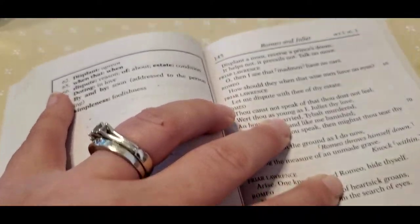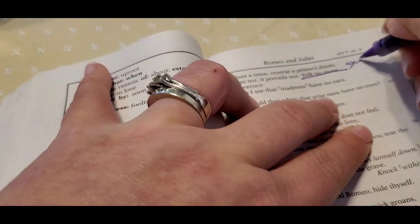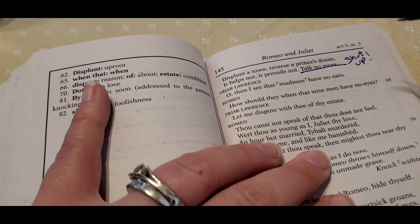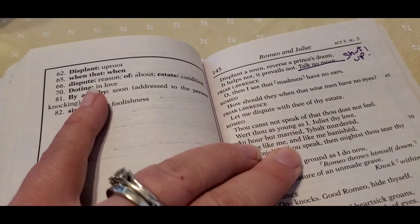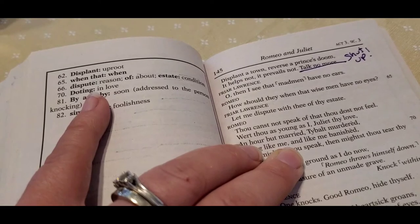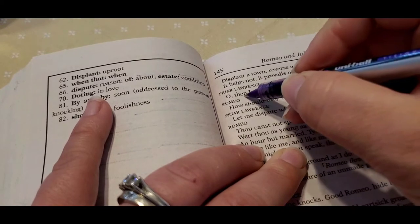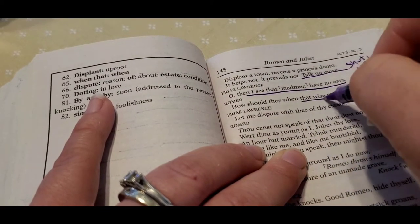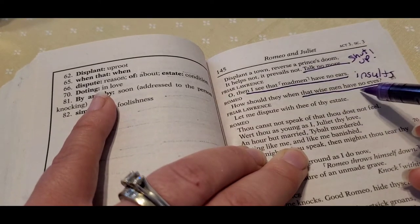Unless banishment can displant a town and reverse a prince's doom, it helps not talk no more. And he tells them to shut up. Now remember like Friar Lawrence has helped him out. Friar Lawrence has gone against the rules. Friar Lawrence married them when he wanted to. And now he's just being really destructive. Not to mention he's harboring a fugitive right now. He's got Romeo at his cell, and he shouldn't be holding onto him. And he says, oh, I see mad men have no ears. And he goes, how should they, when wise men have no eyes? These are insults to each other. He's saying you're blind.